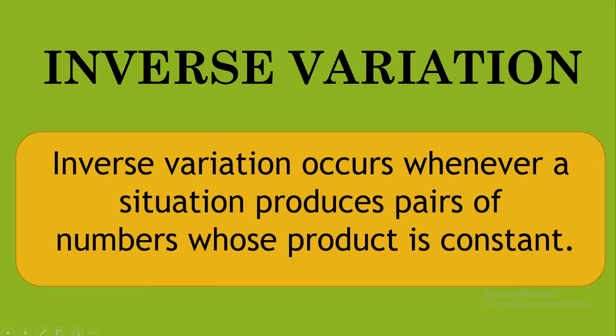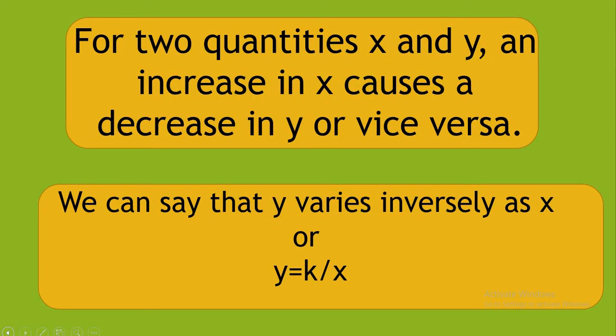Inverse variation occurs whenever a situation produces pairs of numbers whose product is constant. For two quantities X and Y, an increase in X causes a decrease in Y, or vice versa. We can say that Y varies inversely as X when the first variable increases and the second variable decreases, or when the first variable decreases, the second variable increases. We can write it as Y is equal to K over X, where K is the constant of variation.